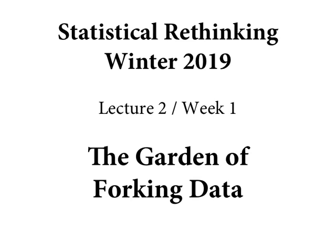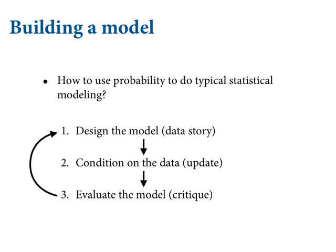Welcome back everybody to the second lecture of Statistical Rethinking, 2019 edition. We're going to pick up exactly where we left off. I've got two main objectives today. The first is to give you an intuition for how Bayesian updating works, how a Bayesian golem learns from experience. And the second is to give you some intuition about how you build these models. The assumptions you build into your model also explain how it learns, because that's the information it uses that structures experience. There's no learning without assumptions.